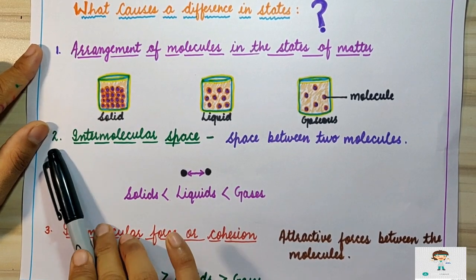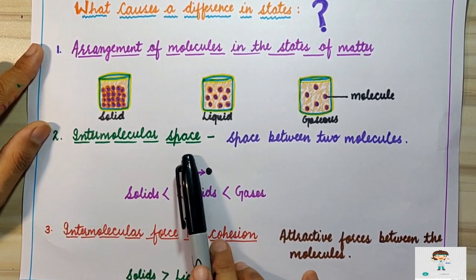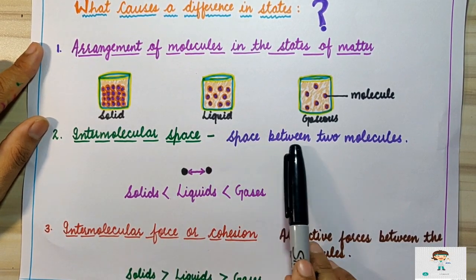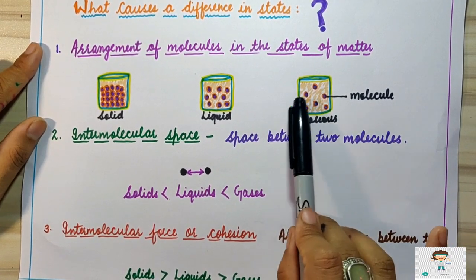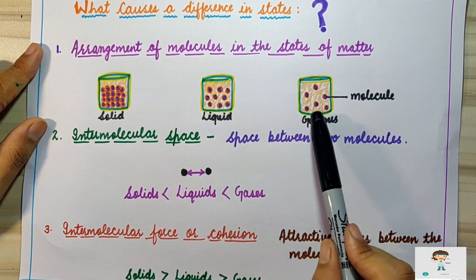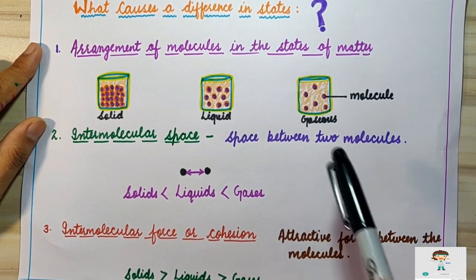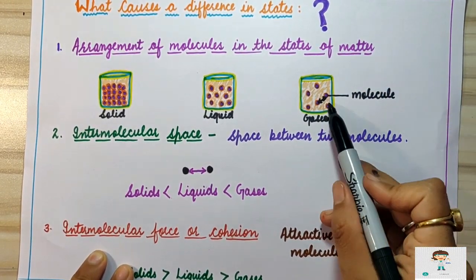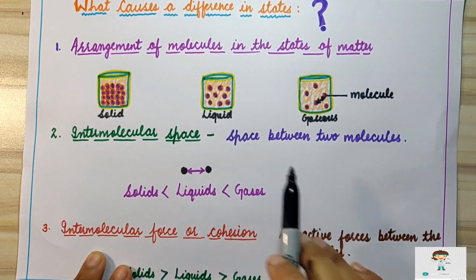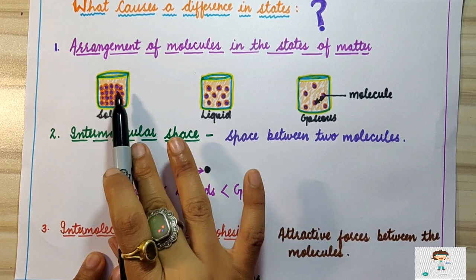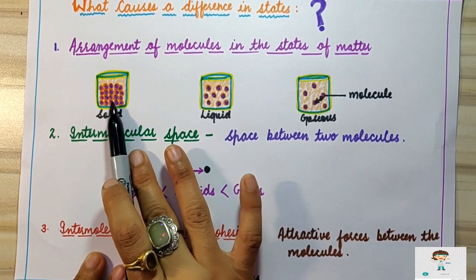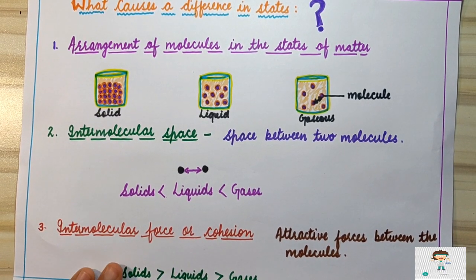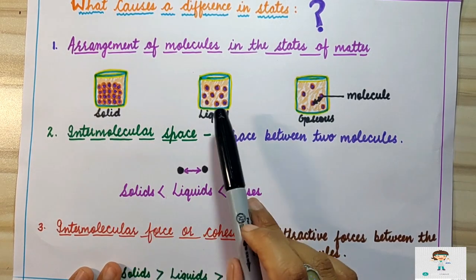The second factor is intermolecular space — the space between two molecules in a state of matter. In the case of solid, particles are closely packed, meaning they have very little or negligible intermolecular space. That is why solid particles cannot move from one place to another, and solids are considered rigid substances.